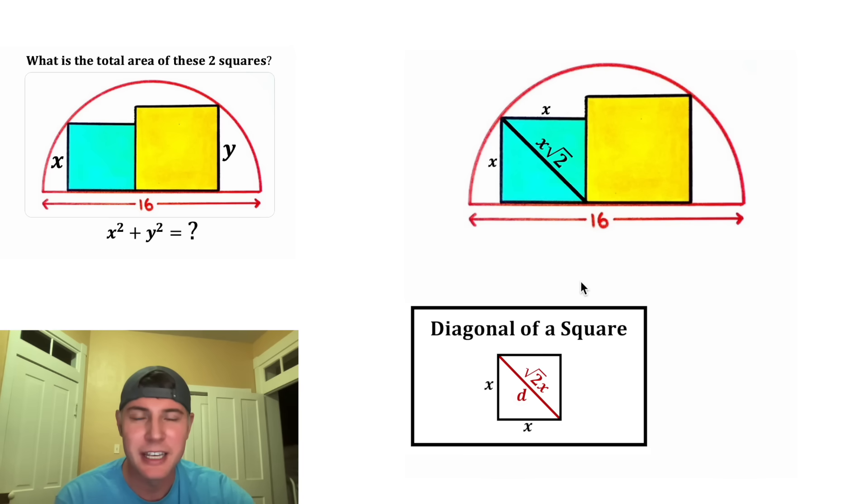So this will have a length of x square root of two. And you can prove that with Pythagorean theorem. If we call the diagonal d, it'd be x squared plus x squared equals d squared. Then you have two x squared equals d squared. Square root both sides and you get d is equal to root two x. And then we can do the same thing for the yellow square. The two side lengths of this square are y, so the diagonal would end up being equal to y root two.